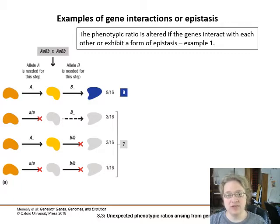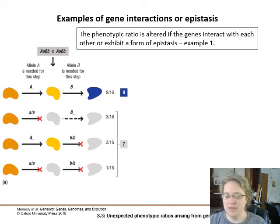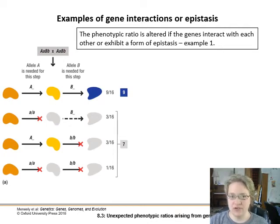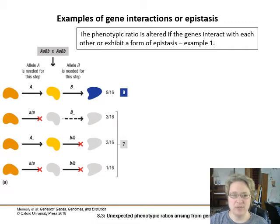This particular type of gene interaction, where one gene determines whether or not the other is expressed, is also referred to as epistasis. Other books get more into the different kinds of epistasis, but we're going to just leave it as epistasis here. So if the genes are interacting with each other, we're going to have a different phenotypic ratio than our 9:3:3:1.